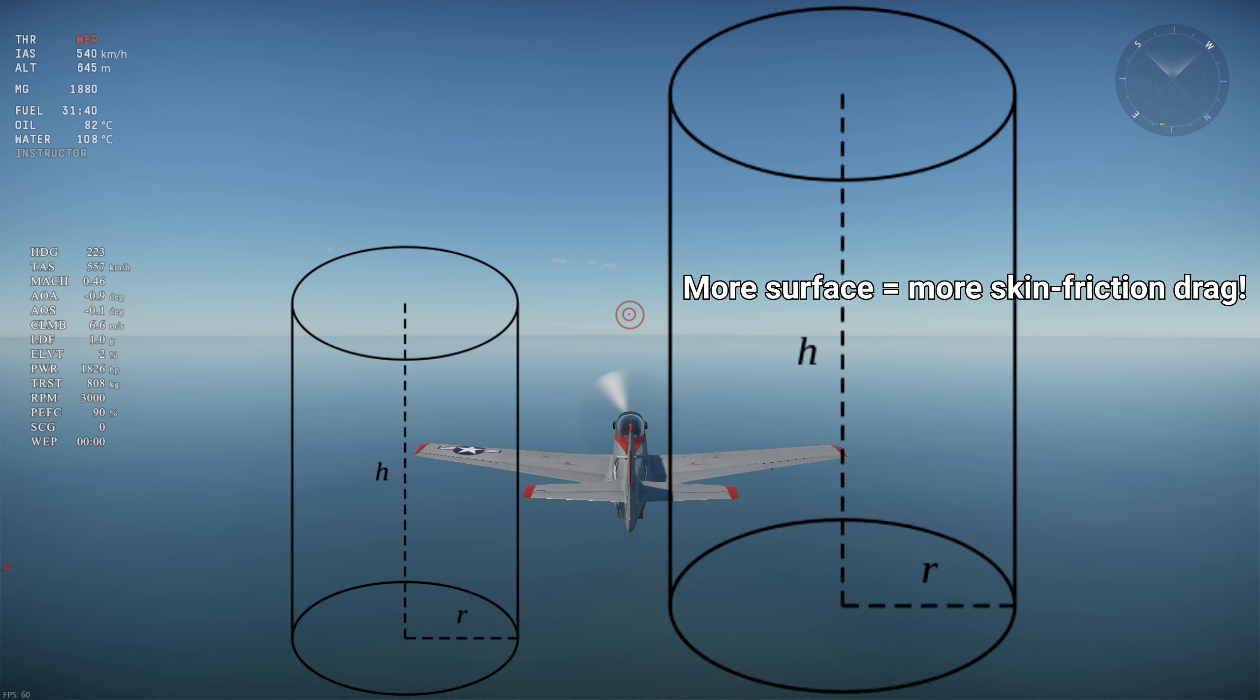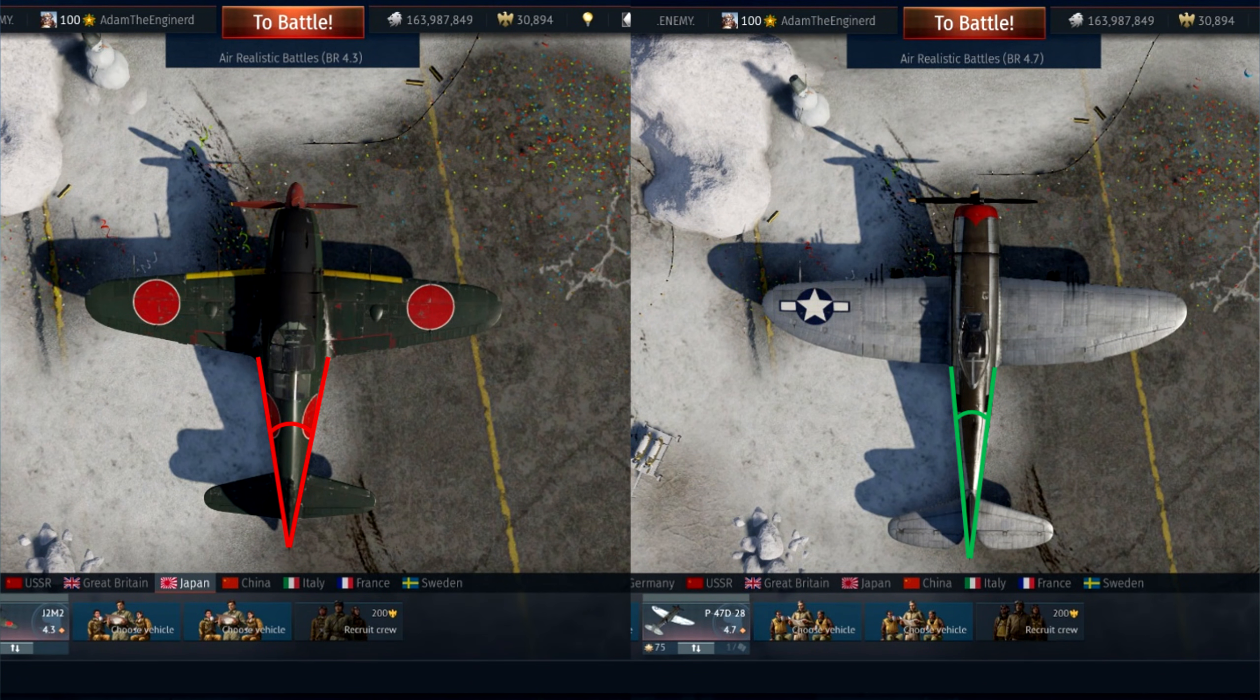If you try to cut down on the fuselage length to compensate for that like on the J2Ms, then in that case pressure drag increases significantly. For our well-designed radial engine however, skin friction drag is still the main component of parasite drag.